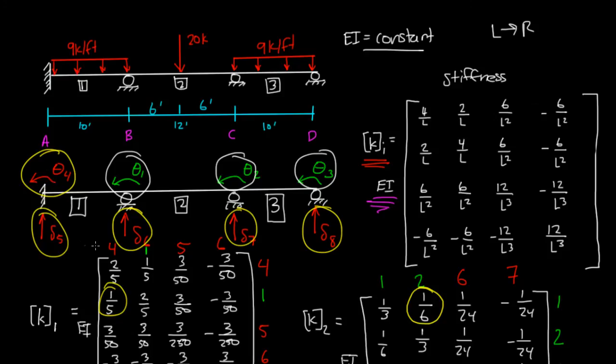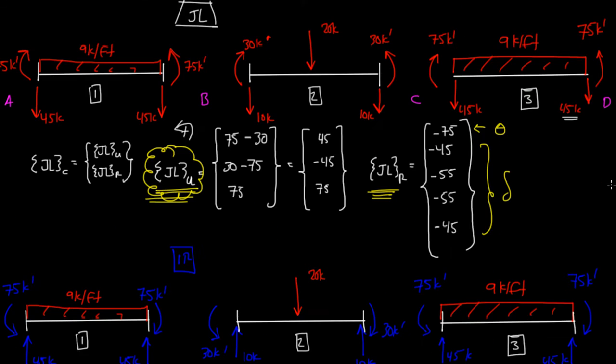And our restrained reactions are basically the reactions happening at the restrained degrees of freedom. In other words, theta 4, theta 5, or delta 5, delta 6, delta 7, delta 8, those are the restrained degrees of freedom. And we're going to use that restrained reaction equation to figure out what the moment here is at A, what the vertical reaction here is at A, what the vertical reaction here at B is, what the vertical reaction at C and D are. So, in order to do that, the first thing we need is our S sub RU matrix.